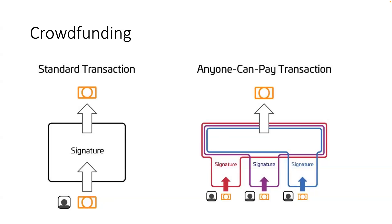In a standard Bitcoin transaction, using the default SIGHASH_ALL, you sign all the inputs and all the outputs. All the inputs most likely come from the same owner because he has the private key that controls them. But what if you want a transaction where the inputs come from different owners? That's where ANYONE_CAN_PAY comes in — and that's also where the name comes from.